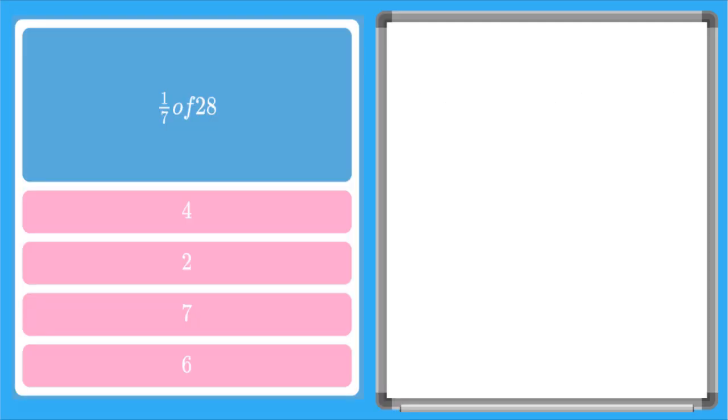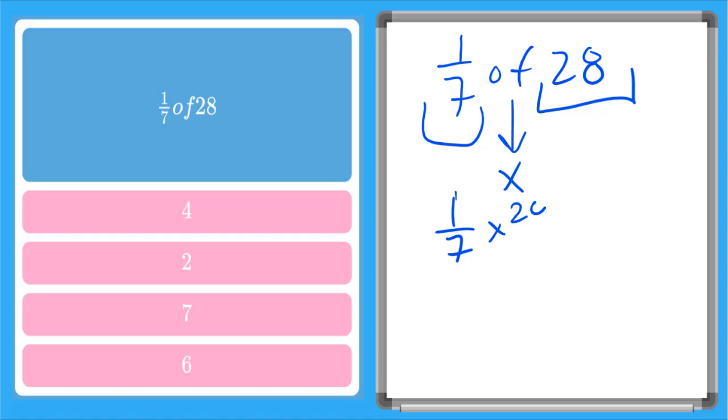So here this one's asking us what's one-seventh of twenty-eight. So we're finding the fraction one-seventh of the set twenty-eight. Remember we can rewrite of as multiplication. So we get one over seven times twenty-eight.